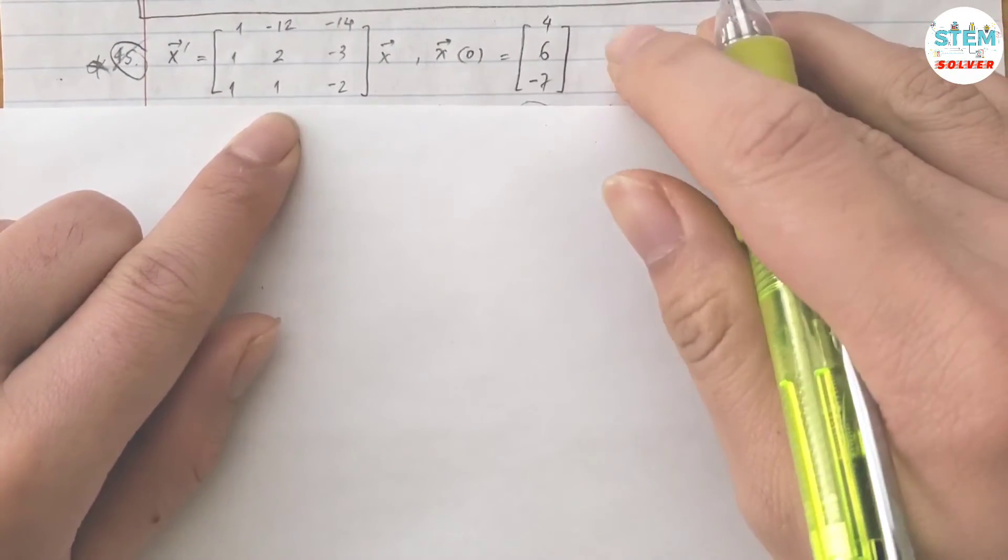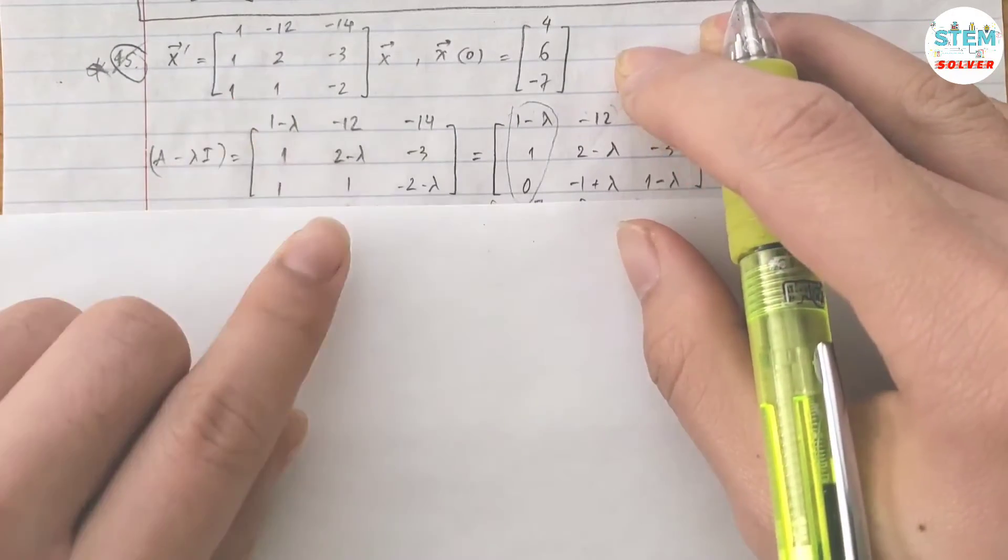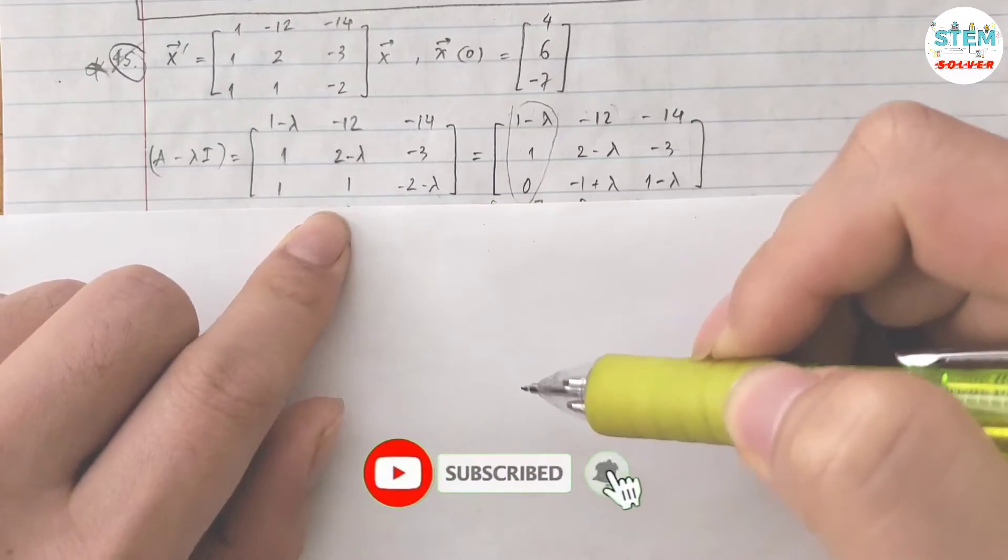So first find A minus lambda I. What is A? A is, let's call this matrix A subtracted with lambda I that gives you this matrix.